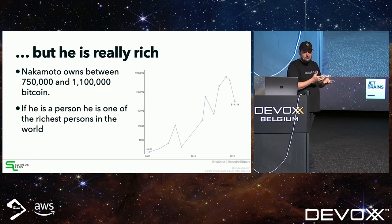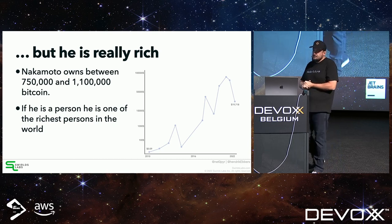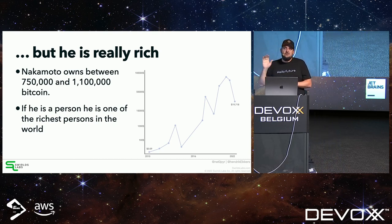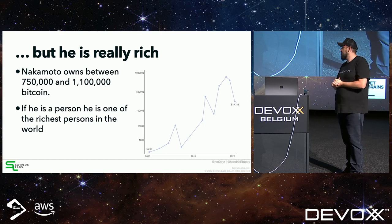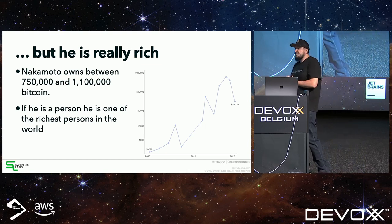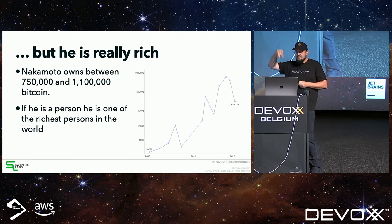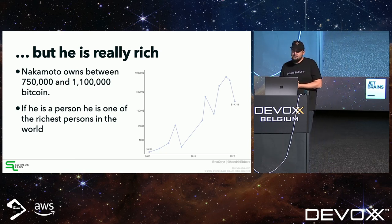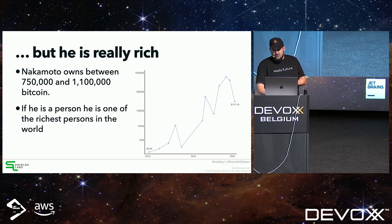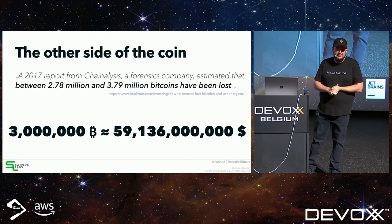What we can say is that whoever Nakamoto is, they're quite rich — owning around one million Bitcoins. At Bitcoin's peak value, Nakamoto was estimated to be among the 20 richest people in the world. Ironically, while Nakamoto became wealthy, many people actually became poor through Bitcoin.